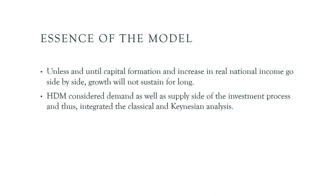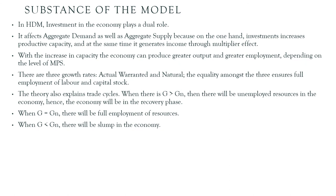Both models concentrate on long-run growth in the economy. The combined model considers both the demand and supply side of the investment process, and integrates both classical and Keynesian analysis. The Harrod-Domar model says that investment plays a very important role: it affects aggregate demand as well as aggregate supply. Investment increases productive capacity, enabling the economy to produce more output, leading to increased employment opportunities, depending on the marginal propensity to save.